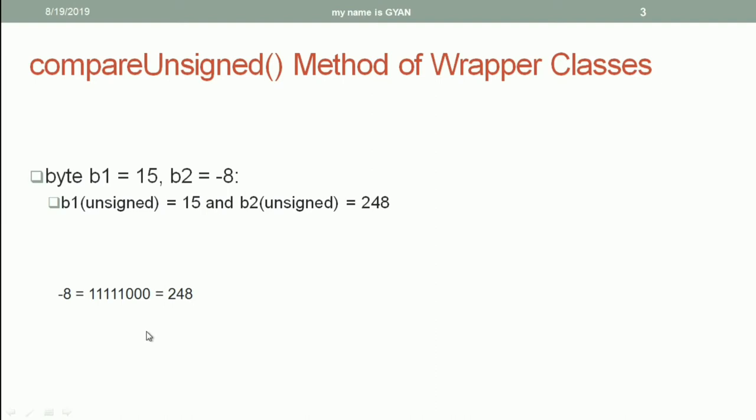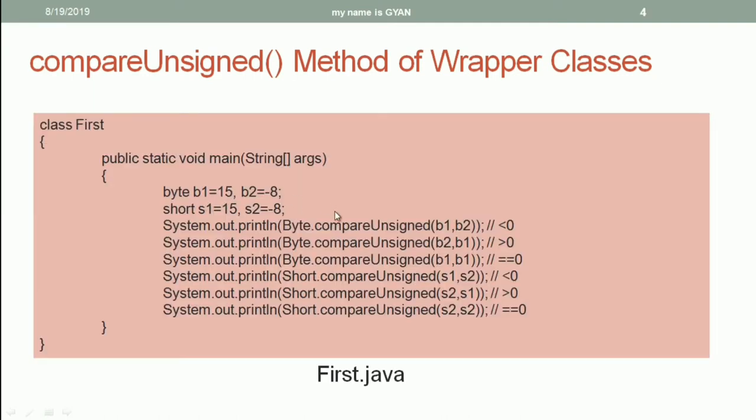To learn more about signed and unsigned numbers, you need to visit session 2 of Java and Web. The link of session 2 of Java and Web is given in the video description. So when you call the method compareUnsigned of the class Byte with b1 and b2 as its arguments, you will get negative number as result.